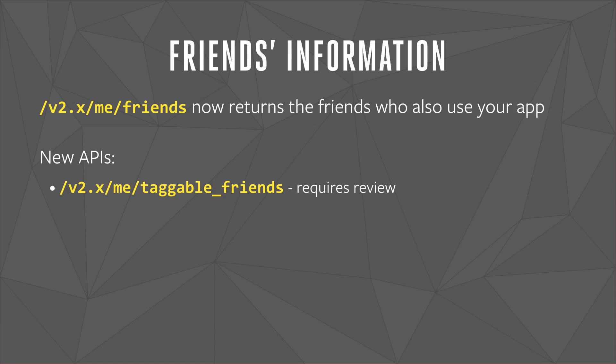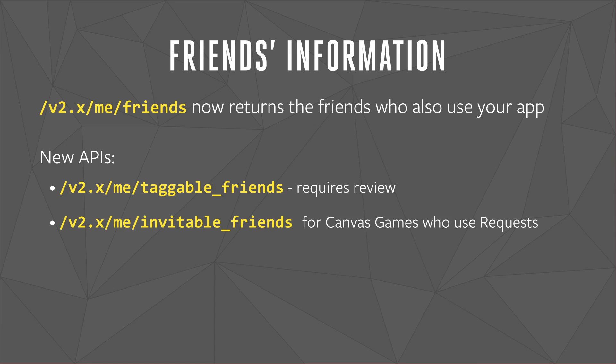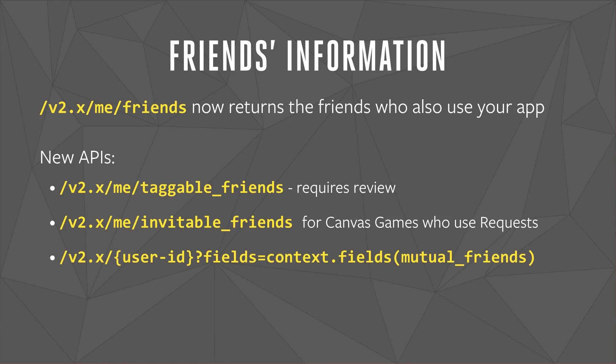You can request review in the same way you do with permissions, in the Status and Review tab of your app's dashboard. Next, for games with a canvas presence, it's a common design pattern to build custom invite dialogs within the UI of your game. The Invitable Friends API returns a person's friends who don't use your app with enough information to render a custom invites dialog. Just like the Taggable Friends API, it returns people's names and profile pictures, as well as a token you can pass to the Requests dialog to invite them to your game. If you want to surface the mutual friends between two people, the Social Context API has a mutual friends field which returns the specific IDs of mutual friends who also use the app, as well as a total count of mutual friends. Lastly, the Friends Edge now includes a total count of the person's friends, both those who do and do not use your app.